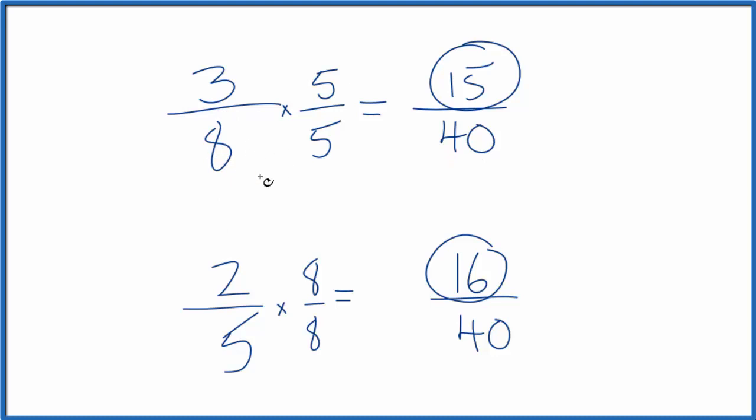Rather than listing all the factors, especially when you get bigger numbers here with lots of factors, you can just multiply the 8 by 5 and then the 5 by 8, and that will get you your common denominator.